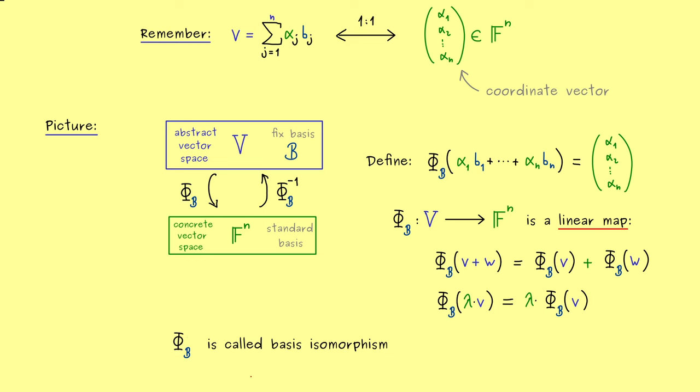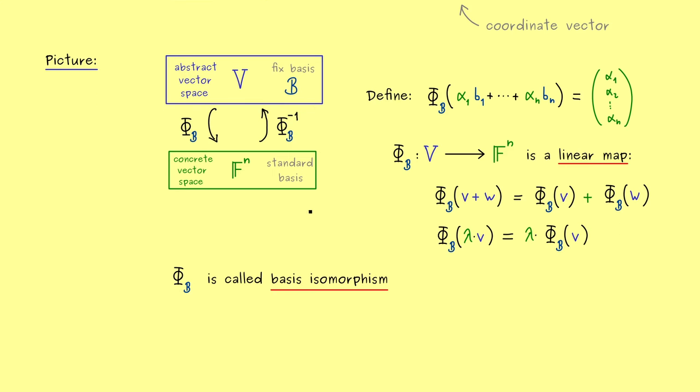It is a very important map and it carries the nice name basis isomorphism. And here you can already remember in general isomorphism just means we have a linear map that is also bijective. And here we call phi B basis isomorphism because it maps the one basis to the standard basis in Fn. In fact this is also something you should remember: if you put a basis element into phi B then you get out a standard basis element.